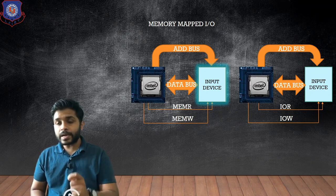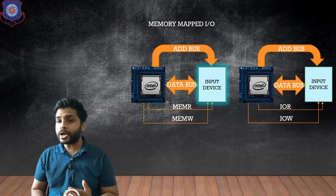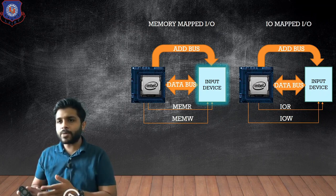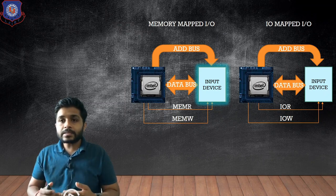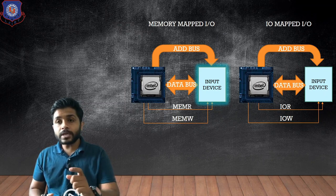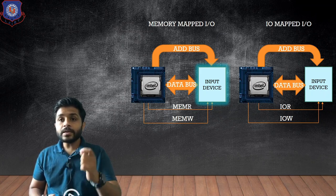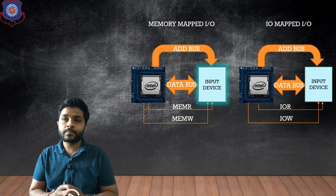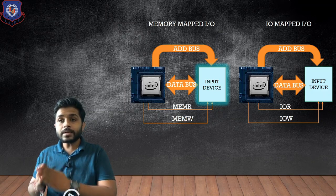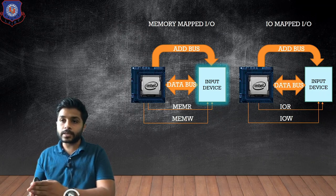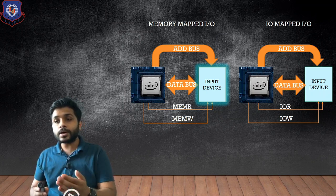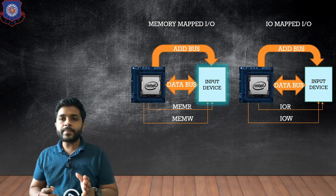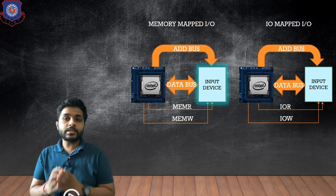And if you connect the input device using the control signals I/O read and I/O write, that is known as I/O Mapped I/O. So, Memory Mapped I/O means we are treating the input/output device as a memory, because we have connected memory-related control signals to the I/O device. And I/O Mapped I/O means we are treating the input/output device as an input/output device, connecting it using I/O read and I/O write. That is the basic concept of both.